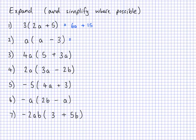Now the next one, we've got an a here instead of a number. This time a times a is a squared. And instead of an add I've got a takeaway, so a times negative 3 — we can think of it as a add negative 3. So a times negative 3 is negative 3a, and I can just write this as takeaway 3a.